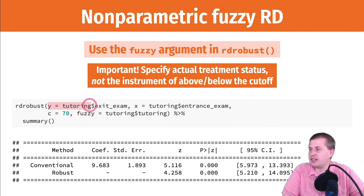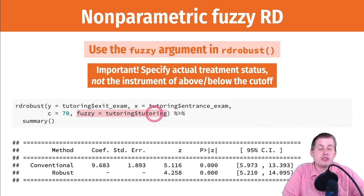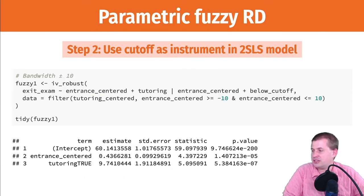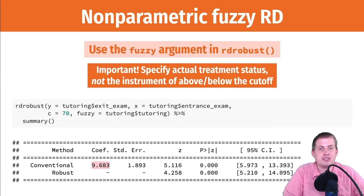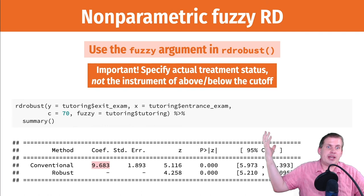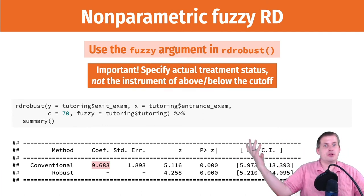So what we're saying here is our outcome is the exit exam, our running variable is the entrance exam, our cutoff is 70, and fuzzy, we're going to use whether or not they use the tutoring. And then behind the scenes it'll make the instrument for you and do it. And so using this non-parametric fuzzy regression discontinuity, here is our causal effect for compliers in the bandwidth, which is 9.68 points. Before it was 9.74 with parametric fuzzy regression discontinuity. This is right because we're using an instrument to account for compliers, and it works because of instruments.